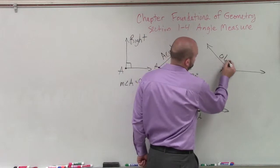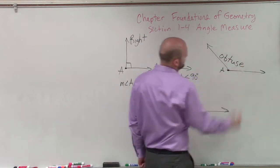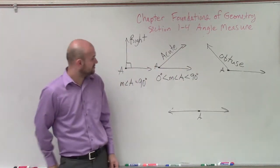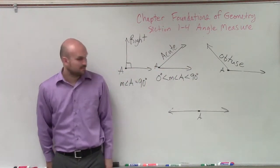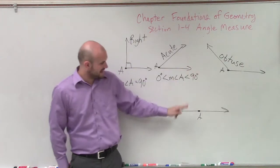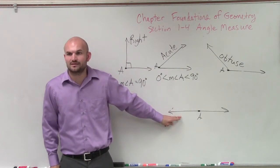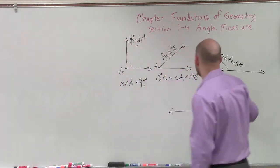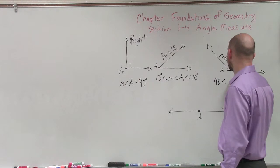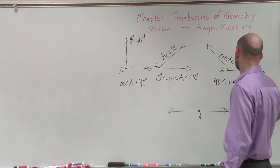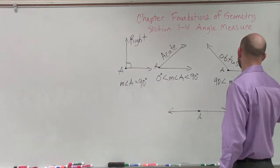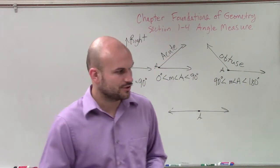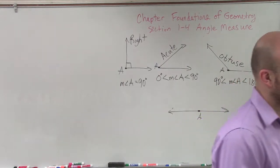The next one: obtuse. Obtuse, you can see, is obviously larger than 90 degrees, right? But it can't be this big, because then that would be a straight angle. So an obtuse angle has to be larger than 90 degrees but less than 180 degrees. Write these down, guys. You just need to make sure you can remember how to classify them, because we will do some problems.